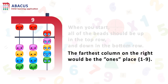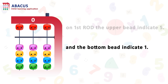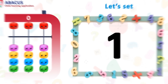The farthest column on the right side would be the ones place. On the first rod, the upper bead indicates the value of 5 and the bottom bead indicates the value of 1. Let's see some examples so we can get more idea about Abacus.